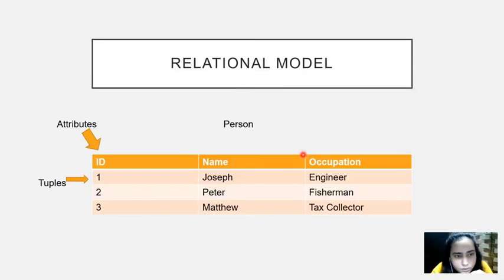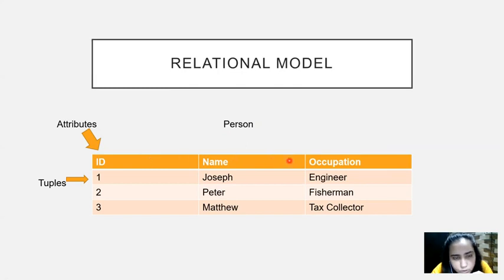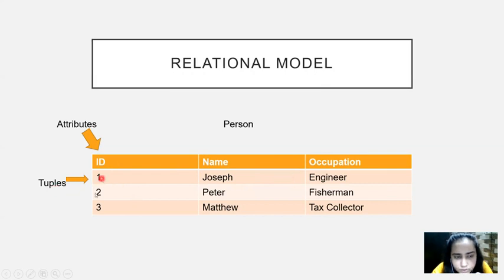Here is a good example of a table in a relational model. I have named the table as 'person' — so this should be a unique name, and I'll call it a relation. The columns, or attributes, are ID, name, and occupation. Each row contains some information — for example, the first row says ID is one, name is Joseph, and occupation is engineer. These three details together form a tuple. This is one tuple, this is the second tuple, and this is the third tuple — so these rows are known as tuples. That's basically your relational model in a nutshell.